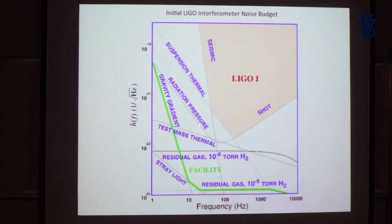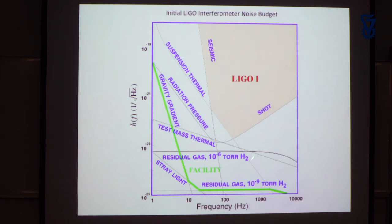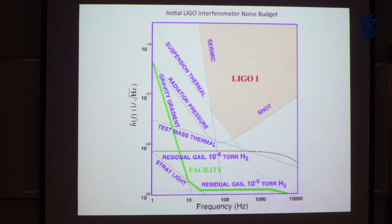The improved — advanced — detector dramatically reduced the seismic noise and thermal noise, and those improvements made the detection possible. The initial detector did not make a detection — it was a very good zero. The gravity gradient noise is an important noise source below 10 Hz, shooting up and providing a reason why you might want to put such a thing into space.